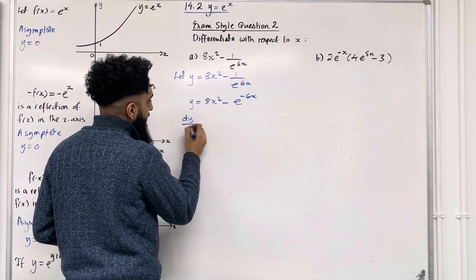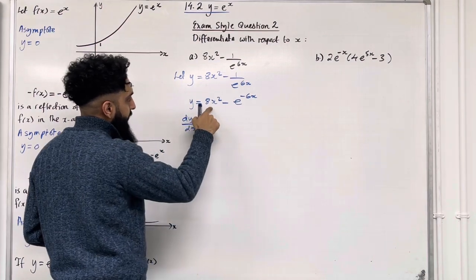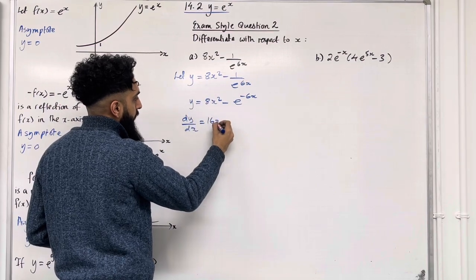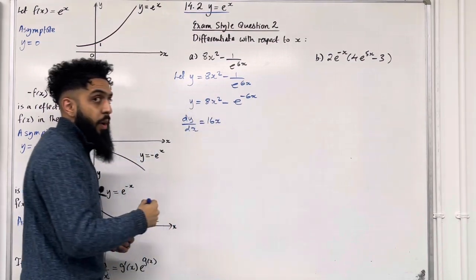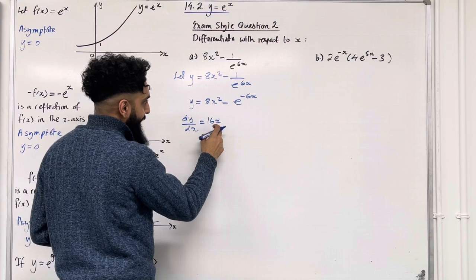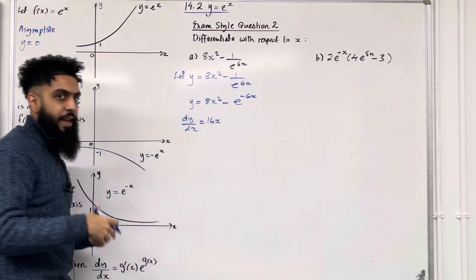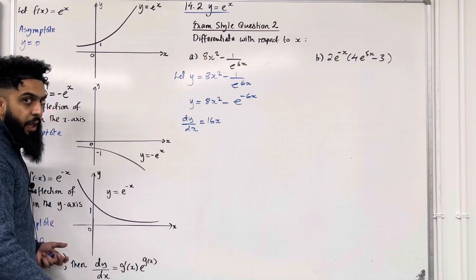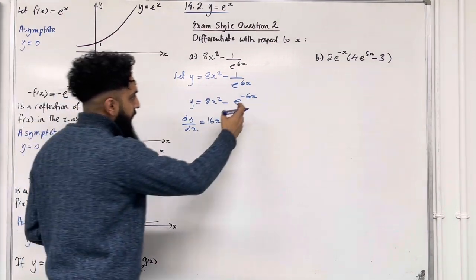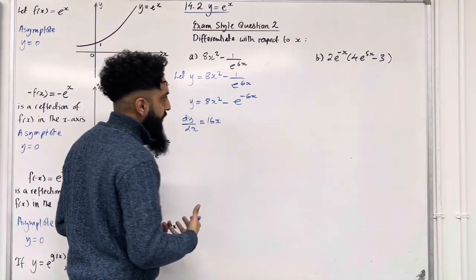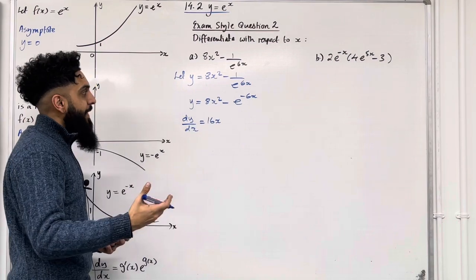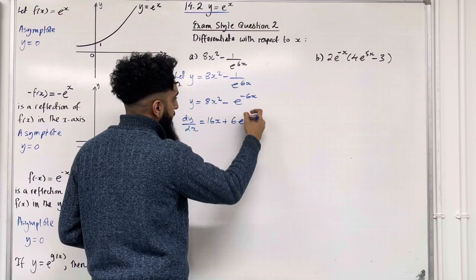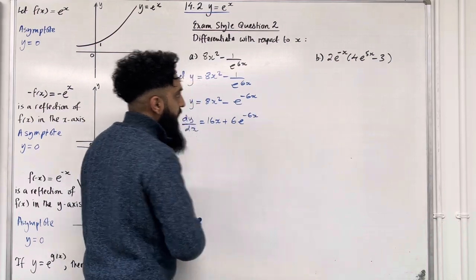Now we can do term by term differentiation. dy over dx: differentiating the first term gives 16x. To differentiate an exponential, we differentiate the power and bring it down, e to the original power. Differentiating minus 6x with respect to x gives minus 6. Minus 6 multiplied by minus 1 is positive 6, so we have plus 6 e to the power minus 6x.